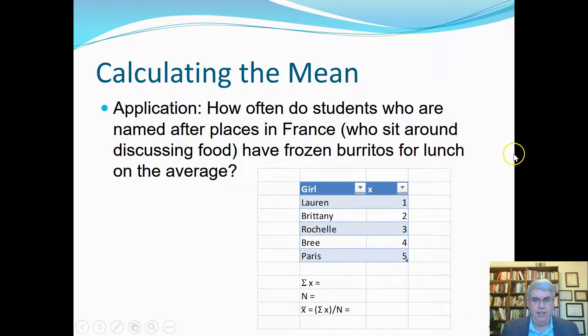Now let's look at how we could actually go about calculating this. Let's take the example of how often these students who are named after places in France, who happen to sit around eating and talking about food, have frozen burritos for lunch on average. We happen to have some data on this. The five girls that we've met previously are Lorraine, Brittany, Rochelle, Brie, and Paris. We have some data on what they did last week, and we can make an estimate based on their data on how many they usually have. So last week, Lorraine had one burrito, Brittany had two, Rochelle had three, Brie had four, and Paris had five burritos.